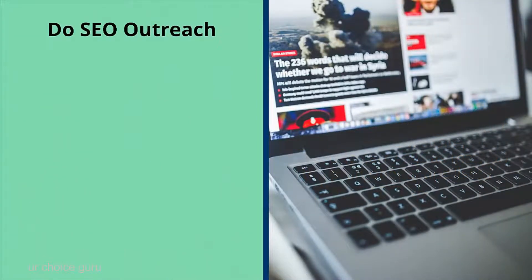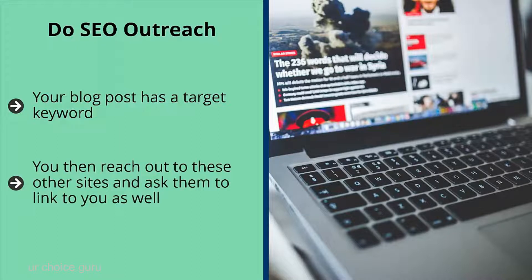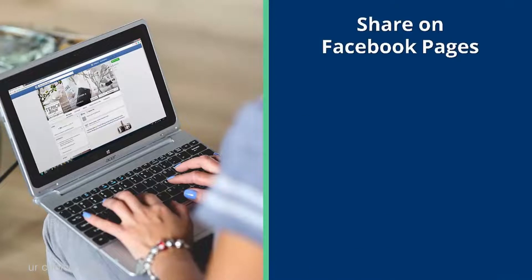Do SEO outreach: once you have a new blog post, look for blogs that link to blog posts that rank high for your target keyword. Load their URLs into backlink checkers like ahrefs.com — this tool will tell you which websites are linking to the sites that already rank for your target keyword. Reach out to these other sites and ask them to link to you as well. After all, they're already linking to content very similar to yours; you just need to persuade them to link to you because your content is superior.